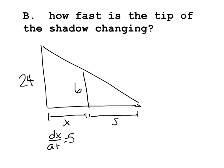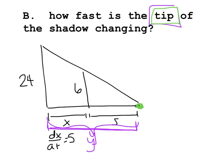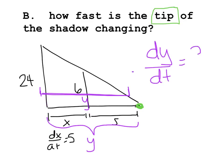Part B to the same question: how fast is the tip of the shadow changing? For years I thought they were asking the same question, but the key difference is the word 'tip.' They're not talking about the shadow itself — they're talking specifically about this tip of the shadow. As he walks, how fast is the tip changing? I'm not finding ds/dt anymore. I'm finding the rate of change of the whole side, and I'm going to use y for that side, so the question is: what is dy/dt?